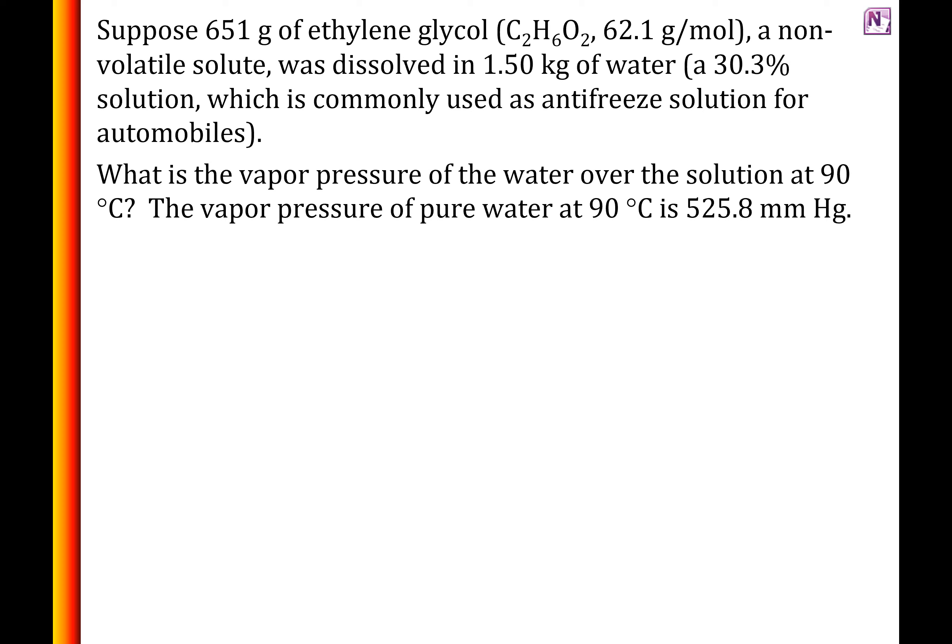Here's one for you to try. Suppose 651 grams of ethylene glycol — formula and formula mass given — which is a non-volatile solute, is dissolved in 1.5 kilograms of water. This is about a 30% solution, commonly used as antifreeze. What is the vapor pressure of the water over the solution at 90°C? Note: the vapor pressure of water at 90°C is 525.8 mmHg. Pause the video, give this a try, and we'll go over it together.